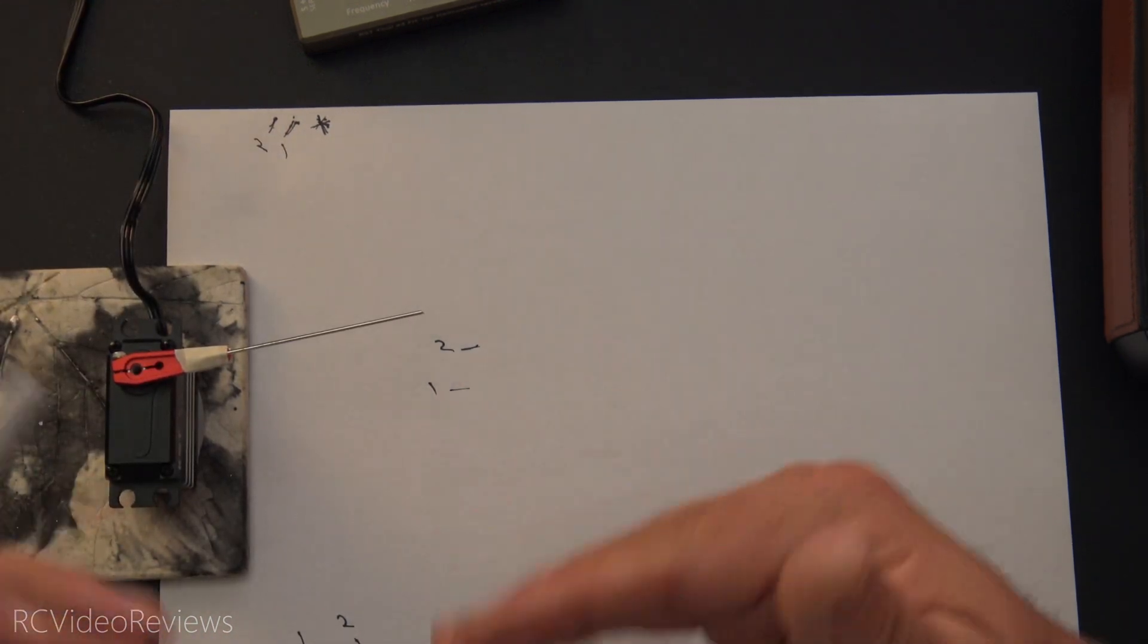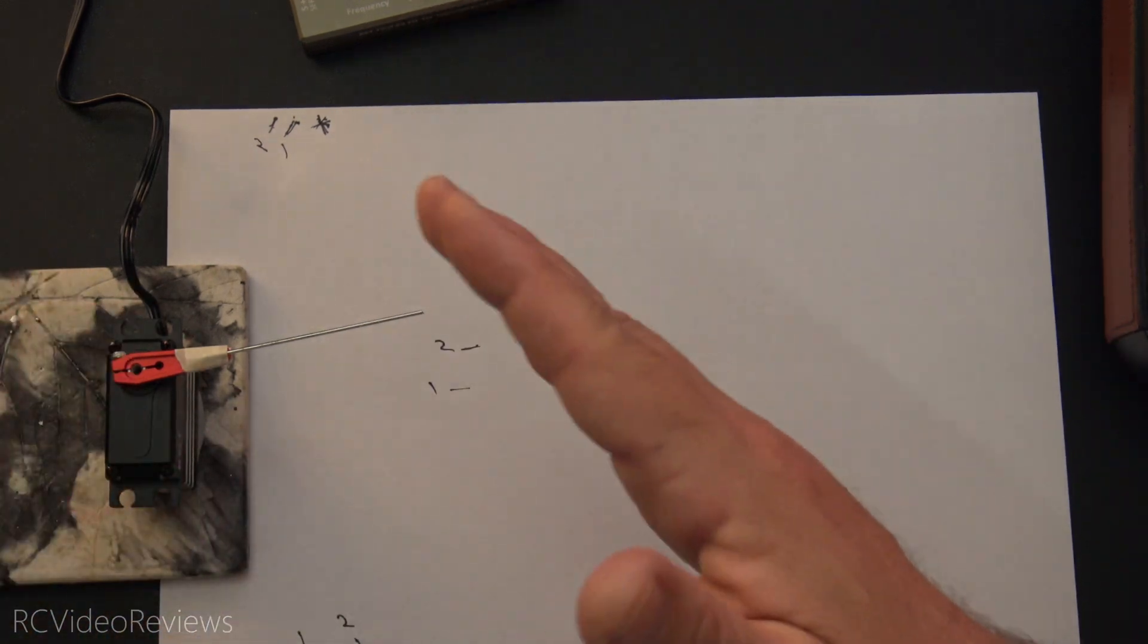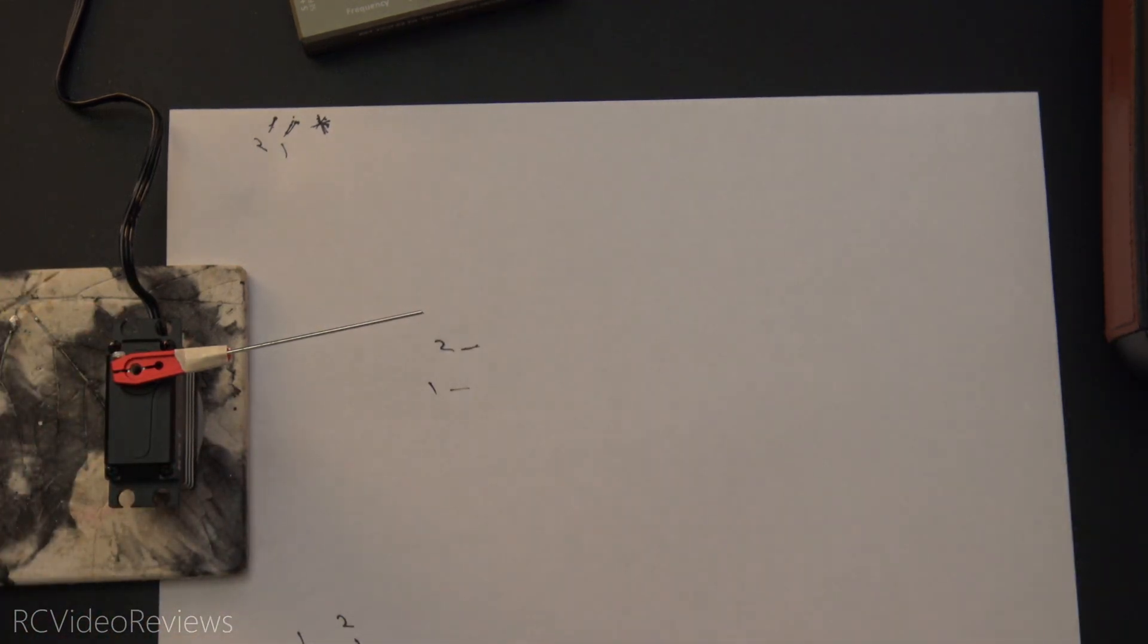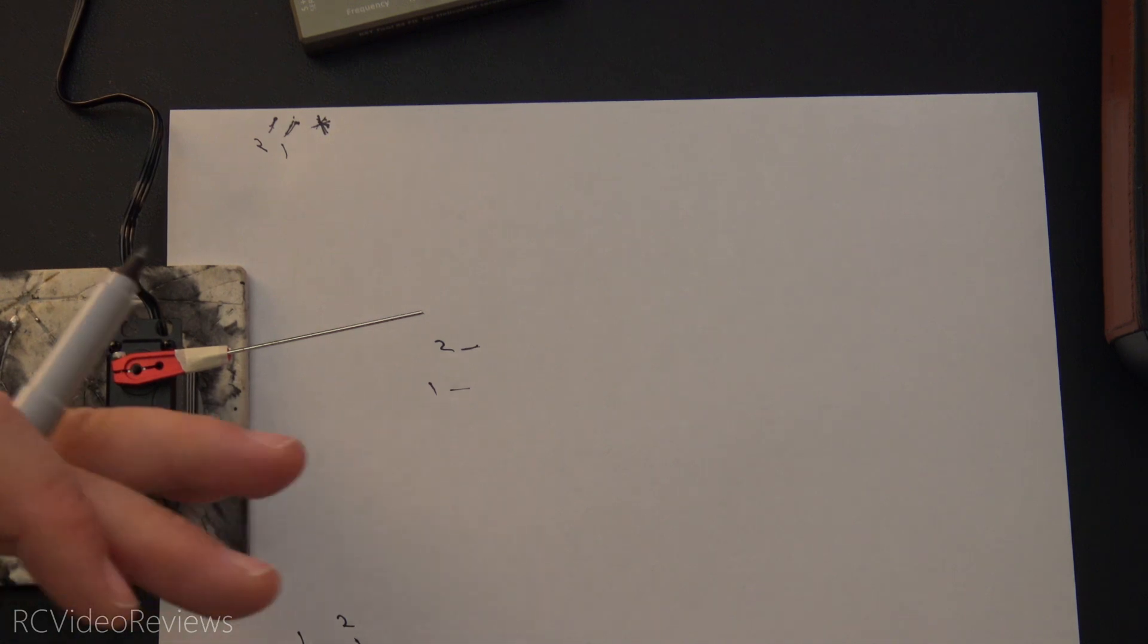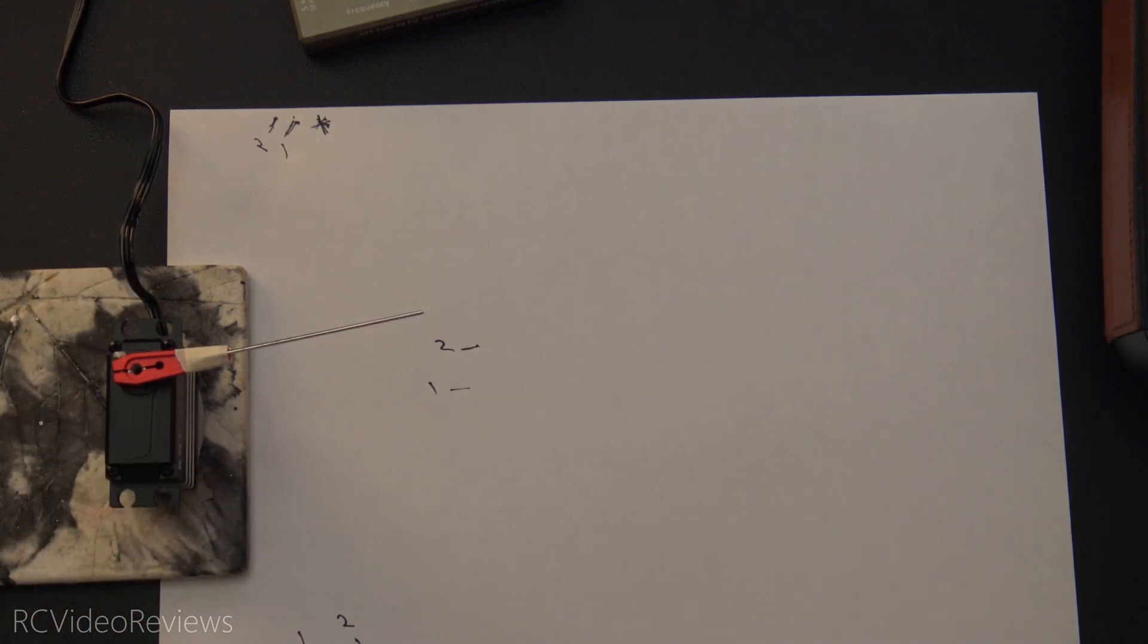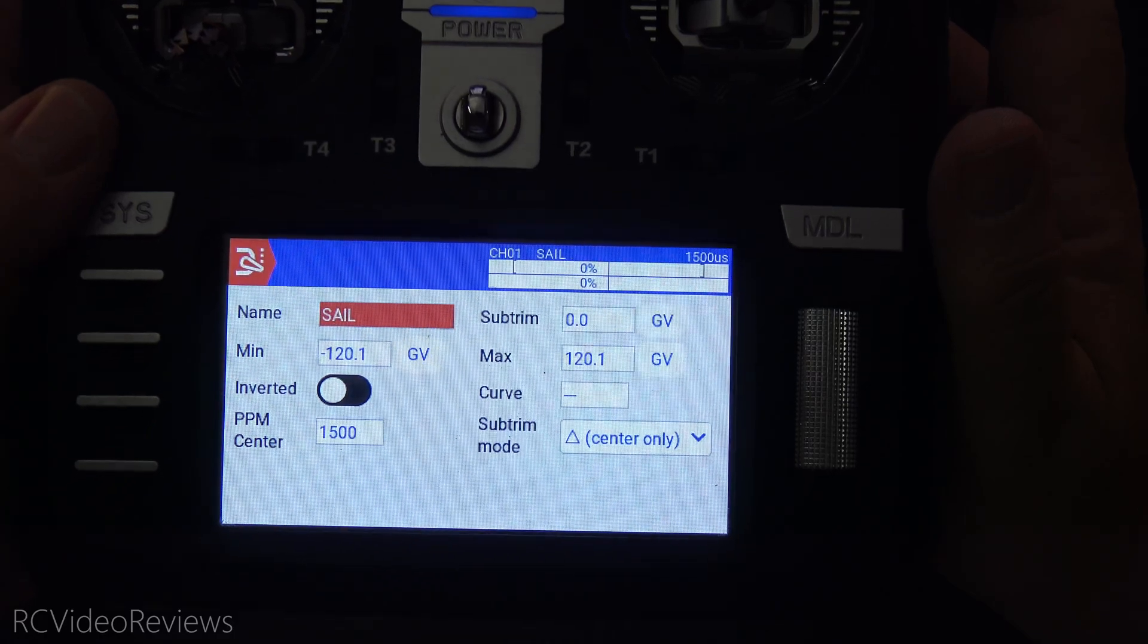So there you go. You can set the center point, and you don't lose the relationship between your end points. All you have to do is set the center and get that arm, in most cases 90 degrees, but you may have a use case that's a little different from that.